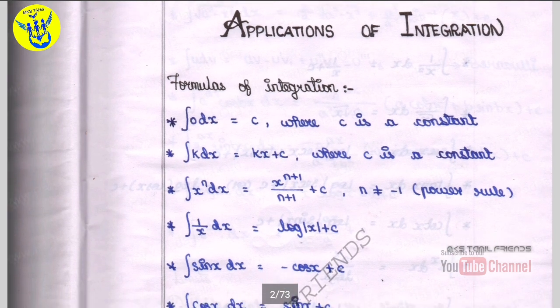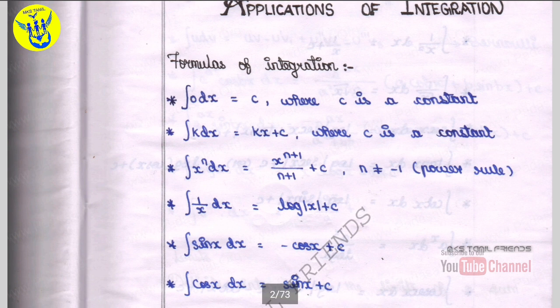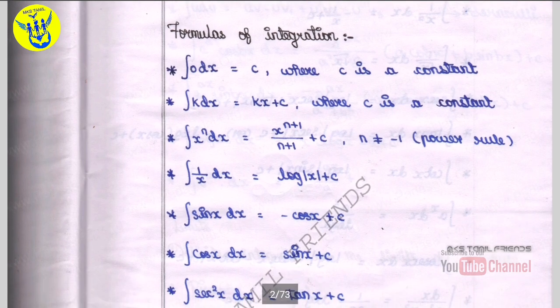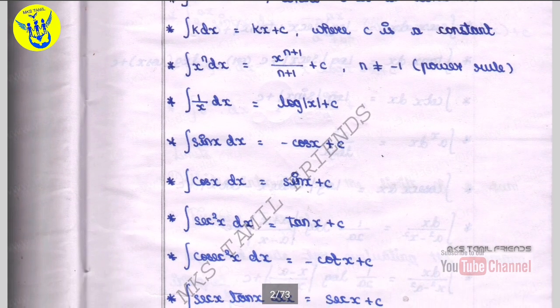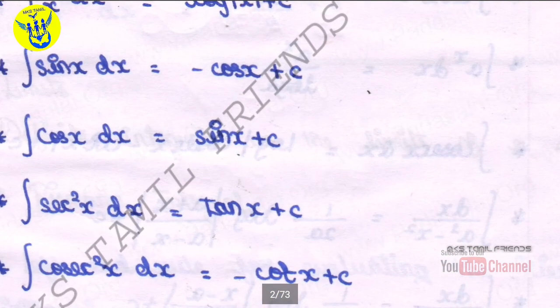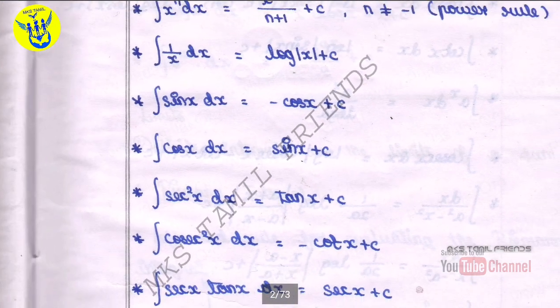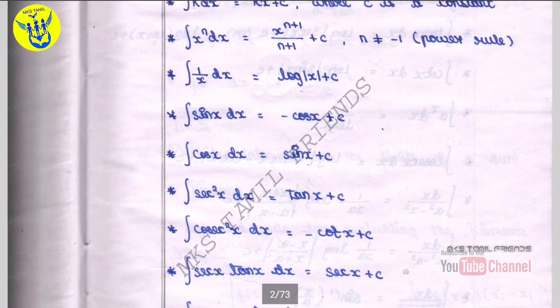Next formula: integral 1 by x dx is equal to log modulus x plus c. Integral sin x dx is equal to minus cos x plus c. Integral cos x dx is equal to sin x plus c. Integral sec square x dx is equal to tan x plus c.